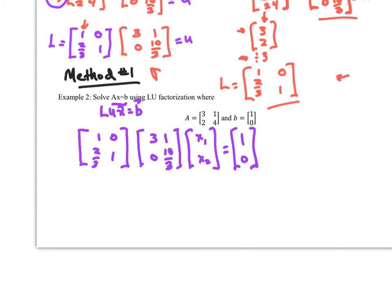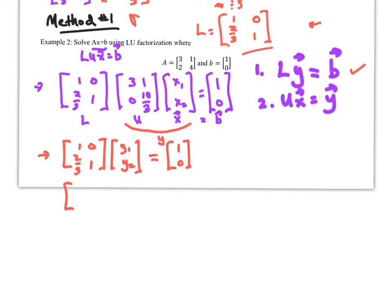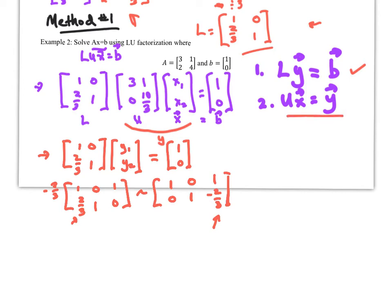So we solve LY = B first, where Y = Ux. Setting up the augmented matrix with L and B, I get two-thirds and one as entries, and then get rid of the two-thirds to find Y.